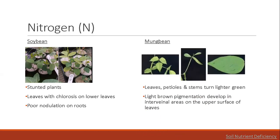In mung bean, nitrogen fertilizer induces rhizobia formation and promotes the growth of strong mung bean seedlings. Increasing nitrogen fertilizer application during the early growth period promotes vegetative growth and creates conditions favoring high yield. Factors affecting nodulation or nitrogen fixation can result in nitrogen deficiency, including the absence of an effective strain of rhizobium, low pH, and deficiency of molybdenum, cobalt, sulfur, or boron. Mung bean nitrogen deficiency is characterized by leaves, petioles, and stems turning lighter green, affecting both younger and older leaves. In severe cases, a light brown pigmentation develops in interveinal areas on the upper surface of leaves.